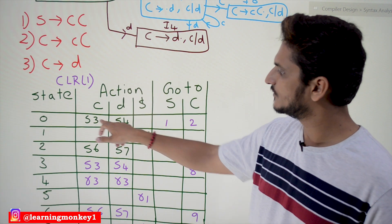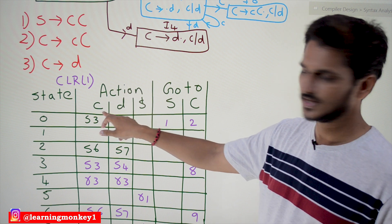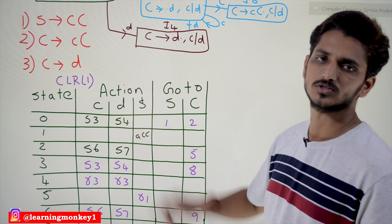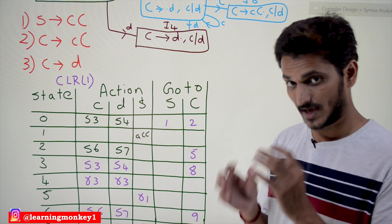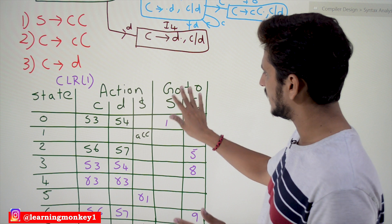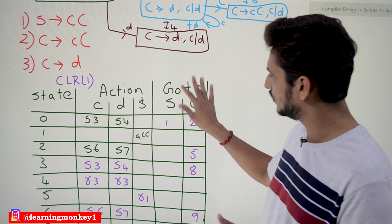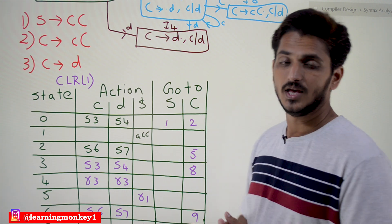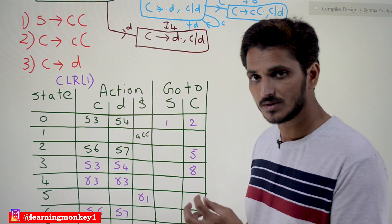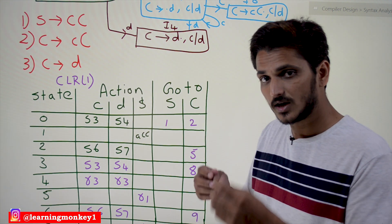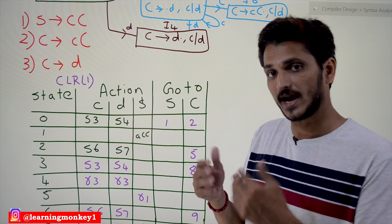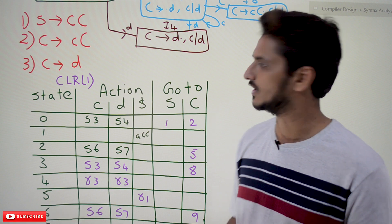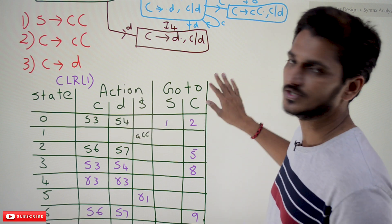In the table: shift to third state if you see small c; shift to fourth state if you see small d. If you are seeing a non-terminal, write it in the Go-To column. If you see a terminal, check whether to do shift or reduce action. This completes the entries for the 0th state.